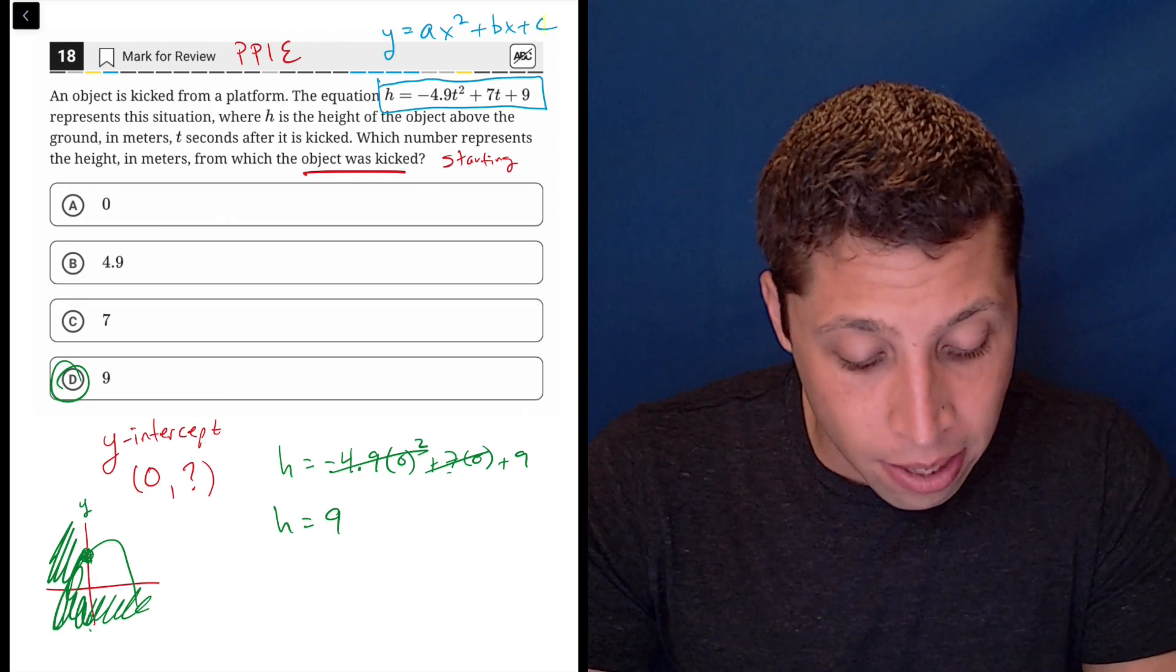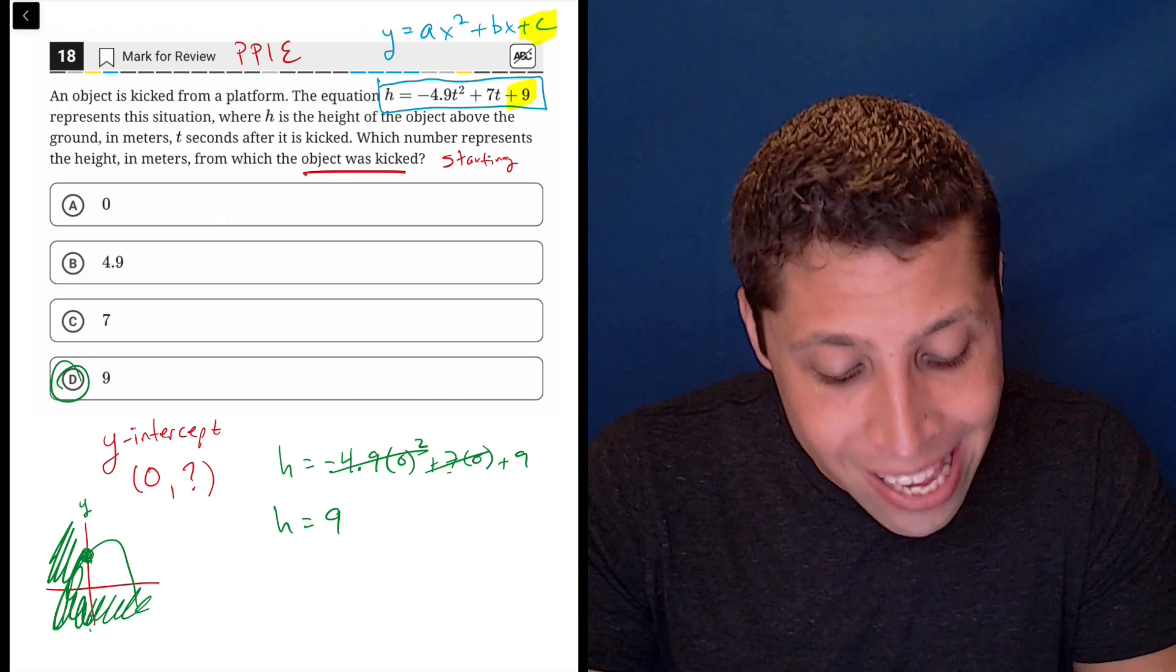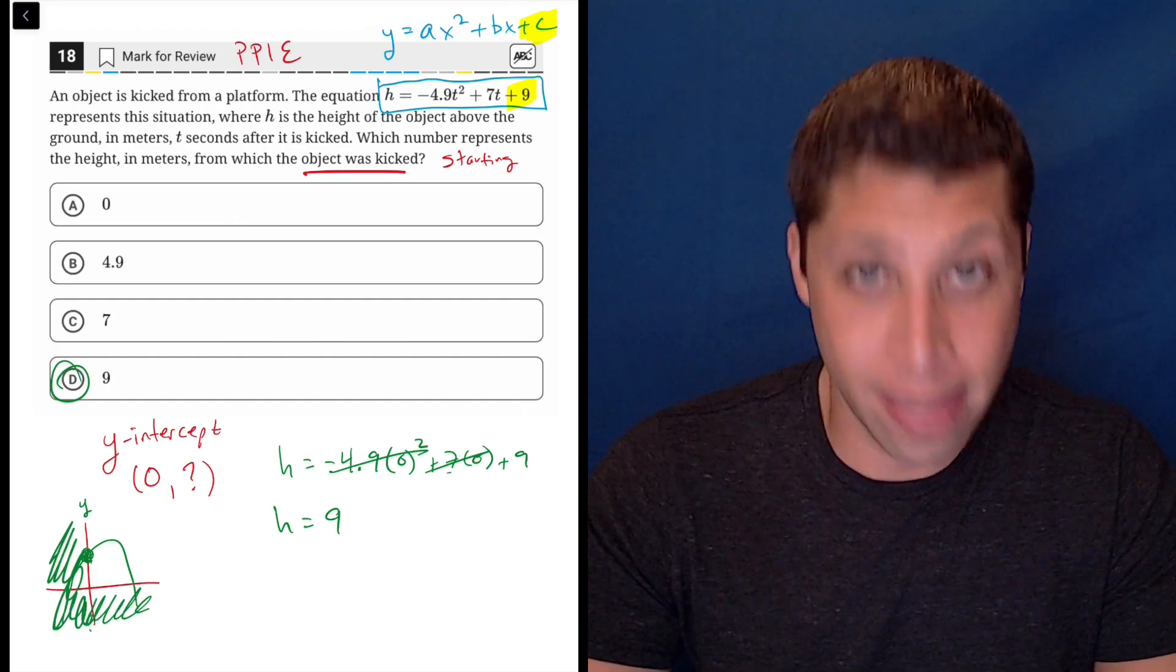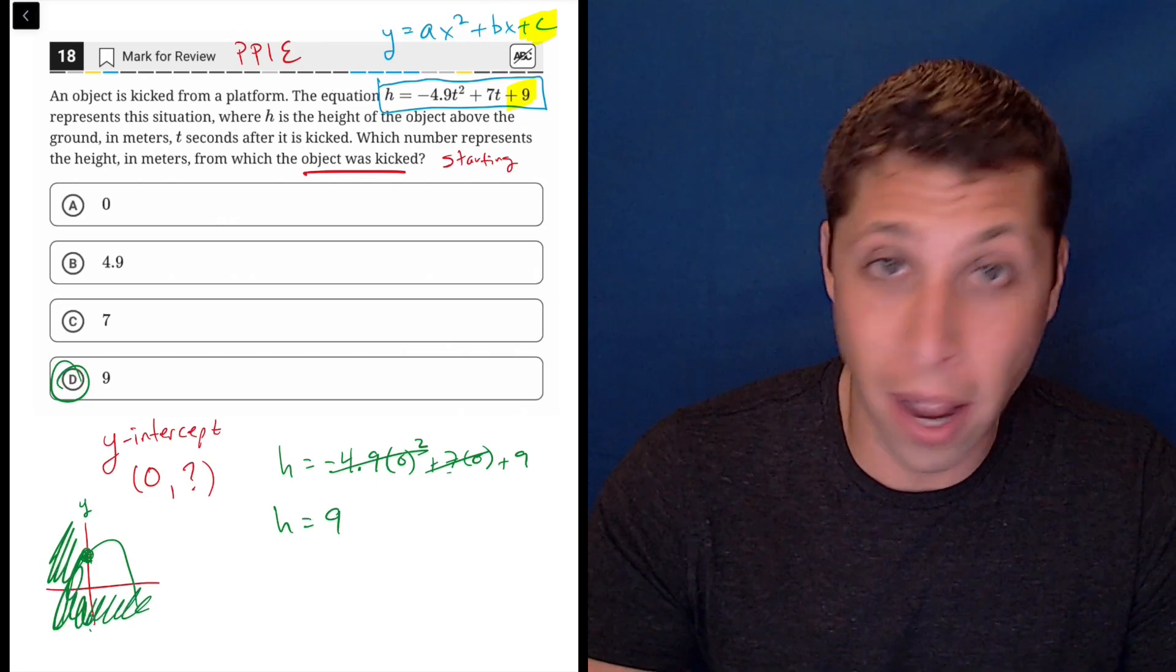And you might want to memorize this: the c term is the y-intercept. Notice the c doesn't have any x's attached and that's the nine, and there you go, that's just the y-intercept.